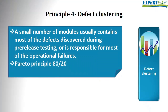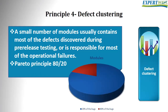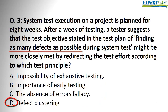In defect clustering, we depend on the Pareto principle, also called the 80/20 rule. It says that approximately 80 percent of the problems are found in about 20 percent of the modules. So if you want to uncover a high number of defects, it's useful to employ that principle and target areas of the application under test where the highest proportion of defects can be found. So the answer is D.